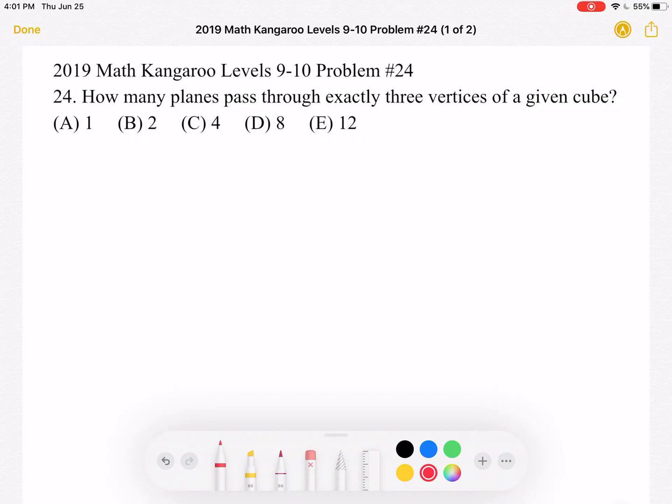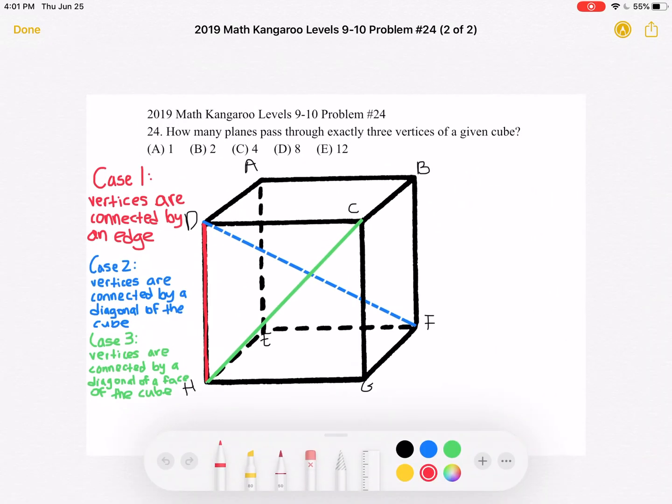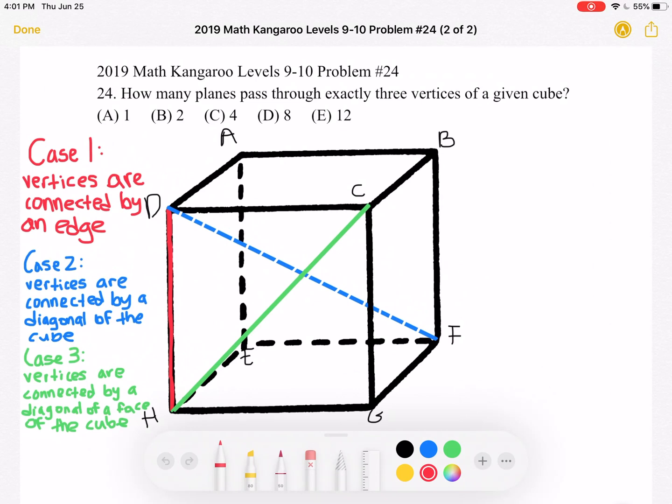This is the problem as it originally appeared on the test and here is where we'll be doing the solution. So we know that we have a cube. I added a cube and labeled the vertices, that has eight vertices and we need to choose exactly three of them.